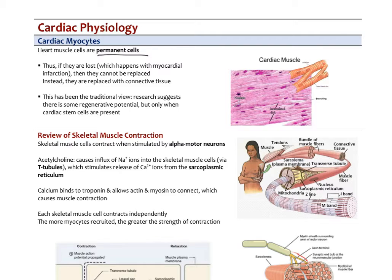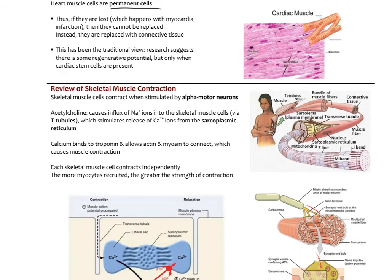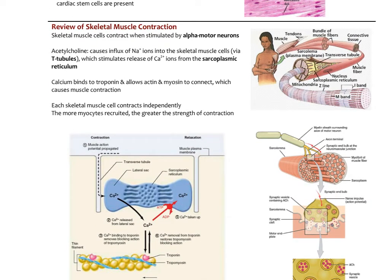To understand how cardiac muscle works, we need to first review how skeletal muscle works in contraction. In skeletal muscle, there are individual muscle cells composed of long bands of protein. The two major muscle proteins are actin and myosin. When they bind to each other, they cause a contraction cycle that shortens the muscle fiber, resulting in muscle contraction.